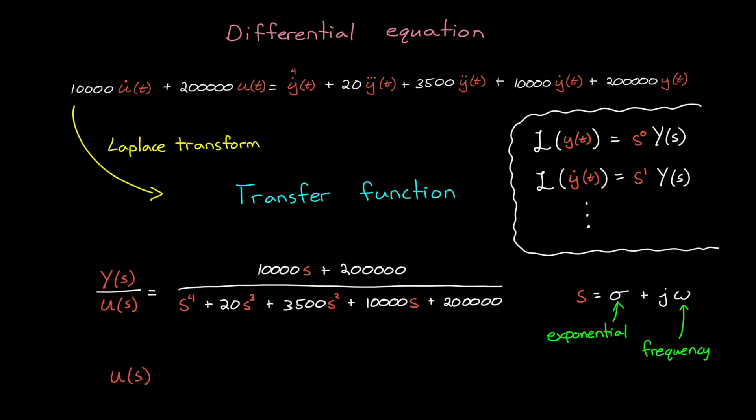So if we have the input as a function of s, or we describe the bump in the road in terms of frequency and exponentials, then we can transfer it through the system by multiplying it with the transfer function. In this way, the transfer function is the ratio of the output over the input in the s domain.